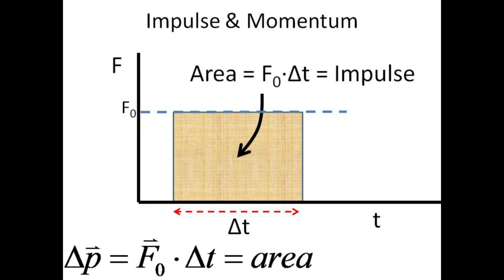If the force were somehow constant with time over the interval delta t, then the impulse, force times time interval, is just the area under a force versus time rectangle. So the change in momentum is equal to the area under the force versus time graph.